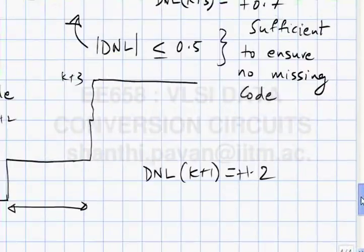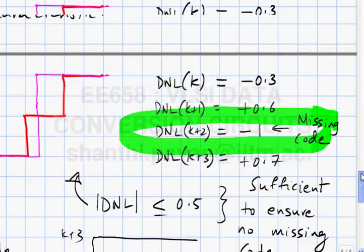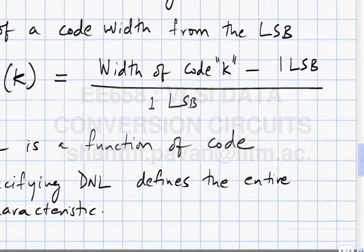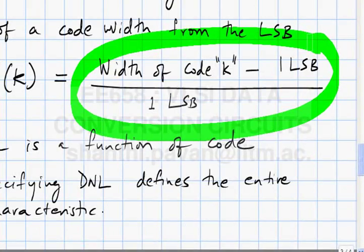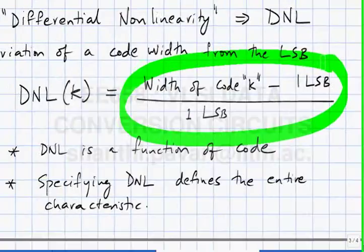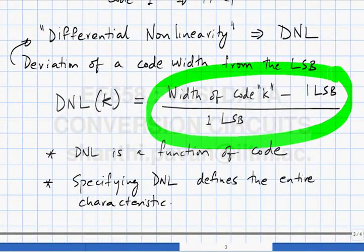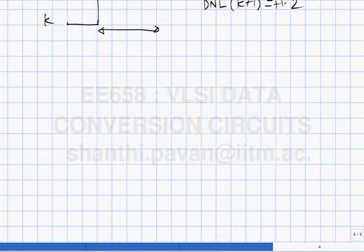In practice, all these things — offset error, gain error, and non-uniform code widths — occur simultaneously. So the question is: what is this LSB? We said the DNL of the kth code is (width of code k − 1 LSB) / 1 LSB, but all that we have is some real non-ideal characteristic.